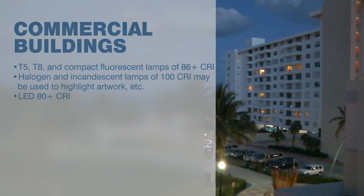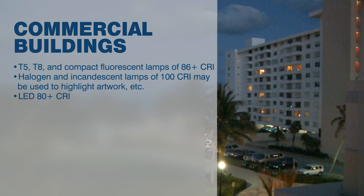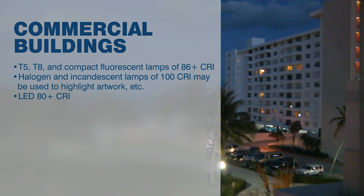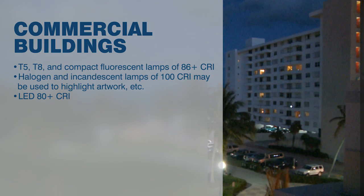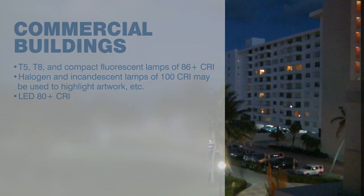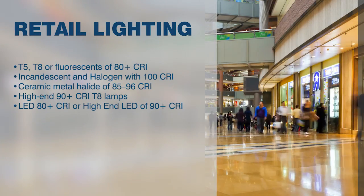Commercial buildings often stick in the 70-86 CRI range for overall color quality, but you will also find halogen or incandescent lamps of 100 CRI used to highlight artwork or other important features in the space.